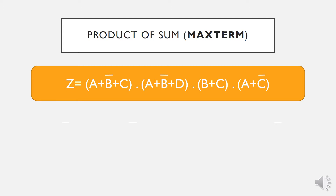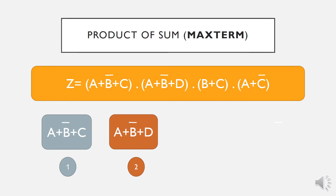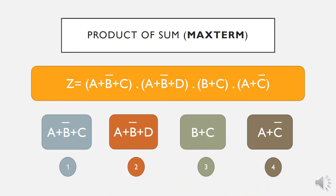Consider this Boolean expression Z. In this expression, there are four sum terms — one, two, three, and four terms — which are then multiplied or ANDed together. Thus, this form of Boolean expression is known as product of sum, or POS.